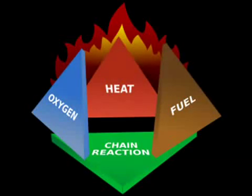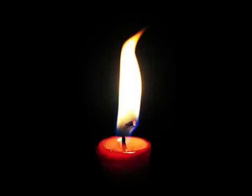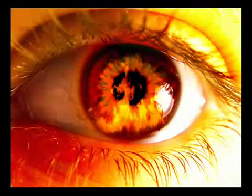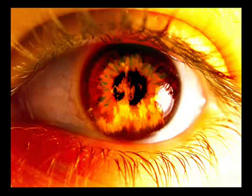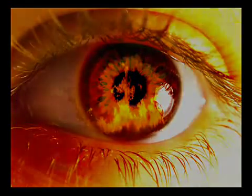Fire is a rapidly occurring oxidation reaction where light, heat, and reaction products are produced. Flame is the visible portion of fire and is basically just a hot gas that glows due to black body radiation. It's important to separate fire and flame because even though fire produces flame, not all flames are produced by fire. Flames are produced simply whenever the air becomes hot enough.